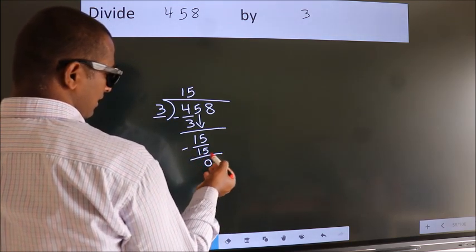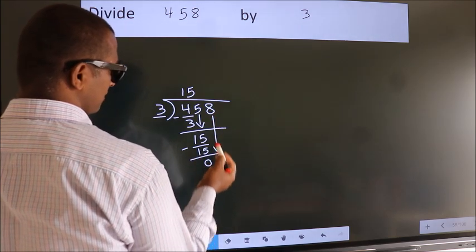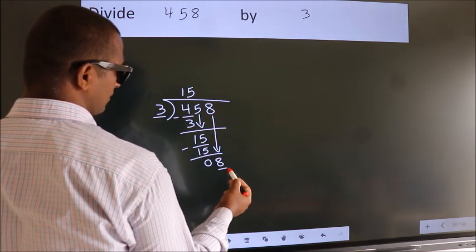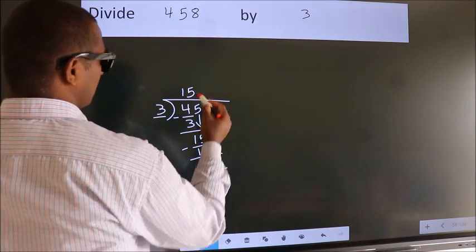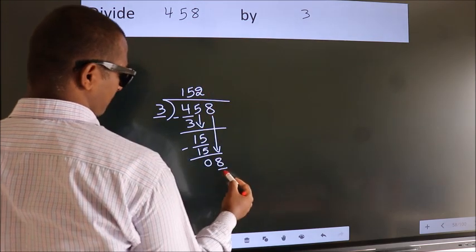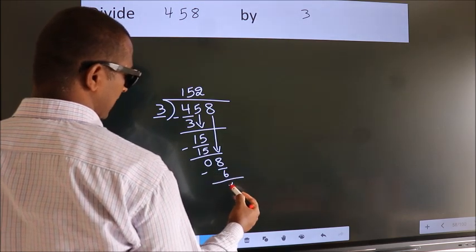After this, bring down the beside number. So 8 down. So 8. A number close to 8 in 3 table is 3 twos, 6. Now we subtract. We get 2.